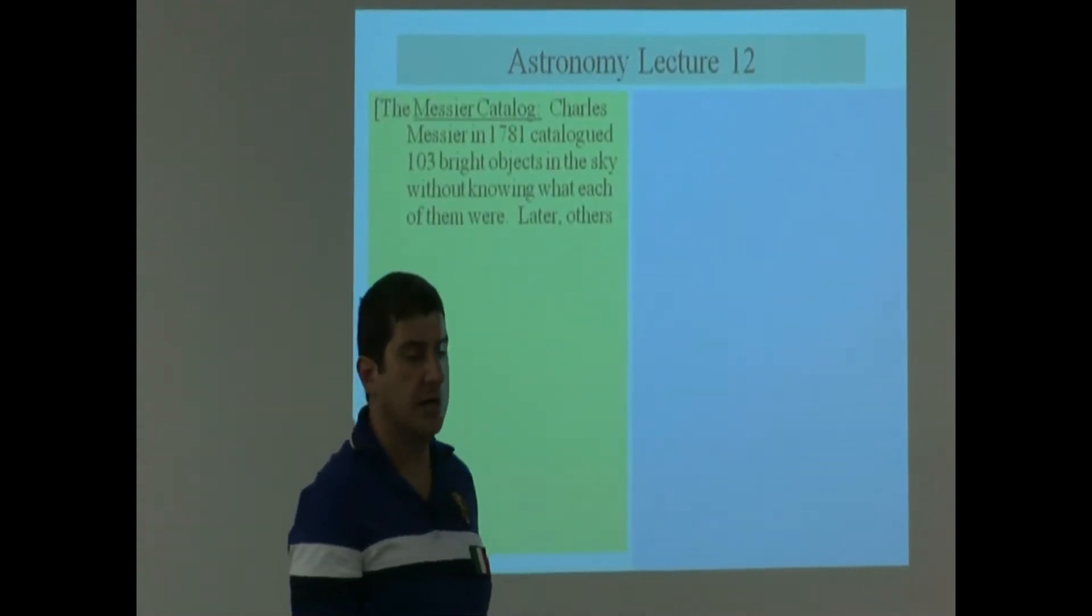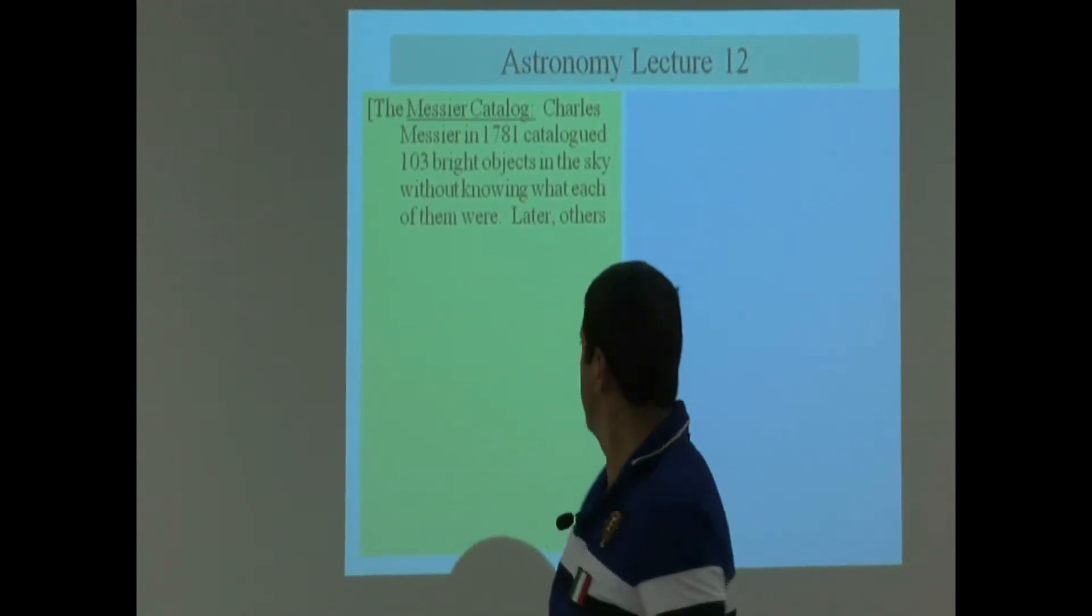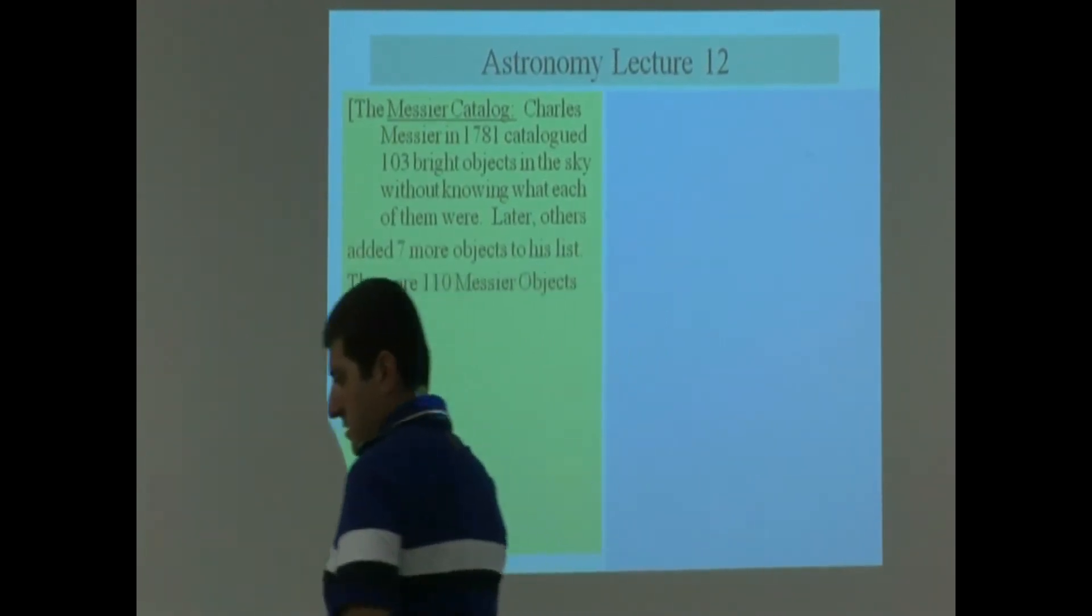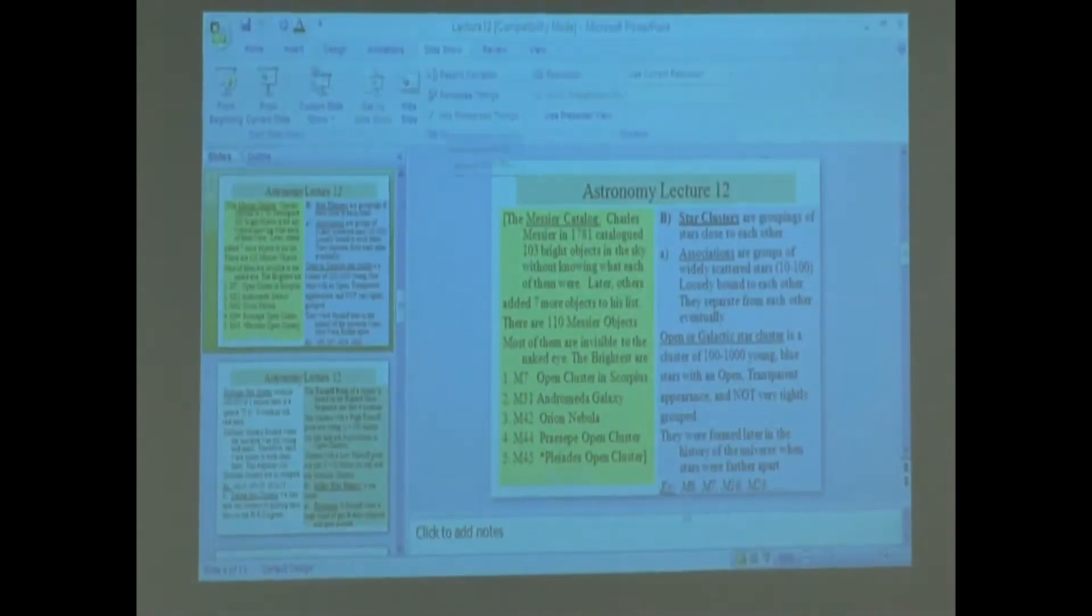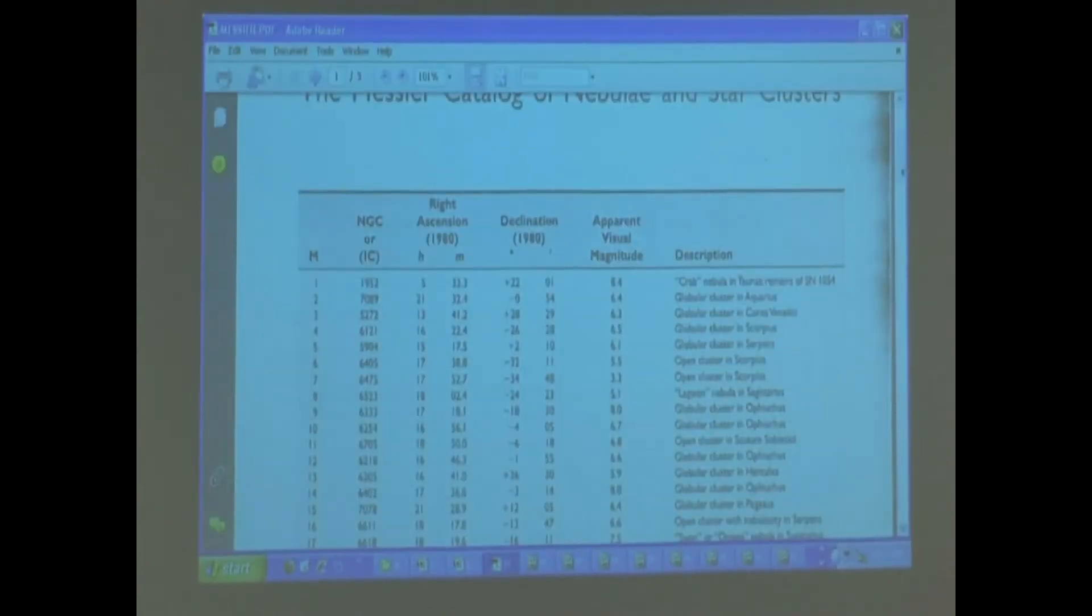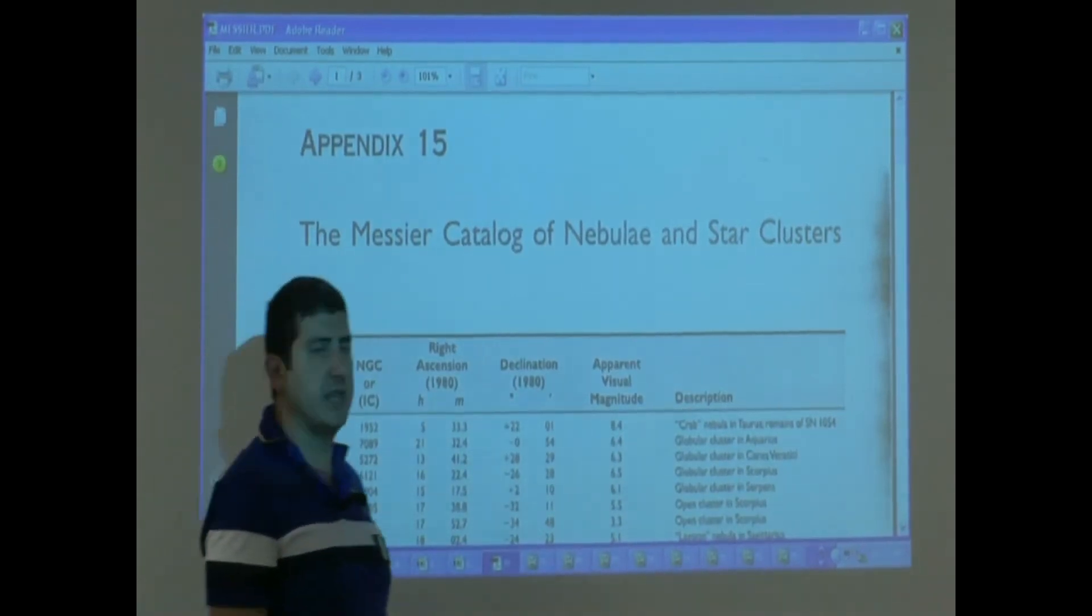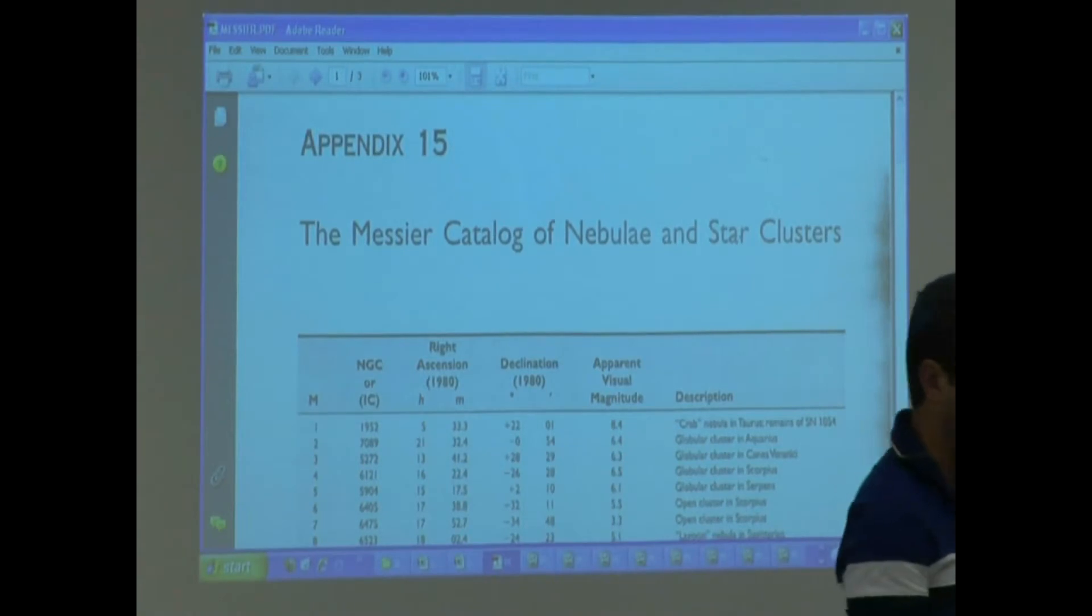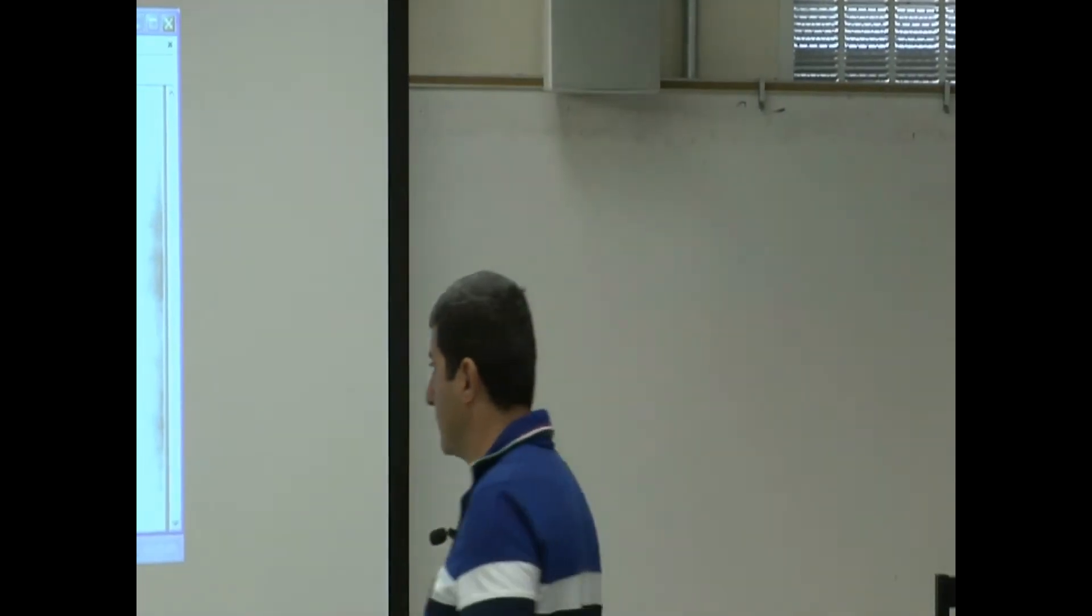Okay, now we get to star clusters. So we take out another chart from my website. You should have it printed out by now. It's called Messier Catalog. So the Messier Catalog of Nebulae and Star Clusters. Let me show you what this chart means and how to learn what the different columns mean.